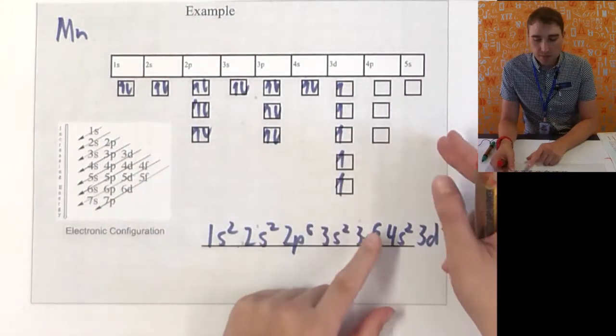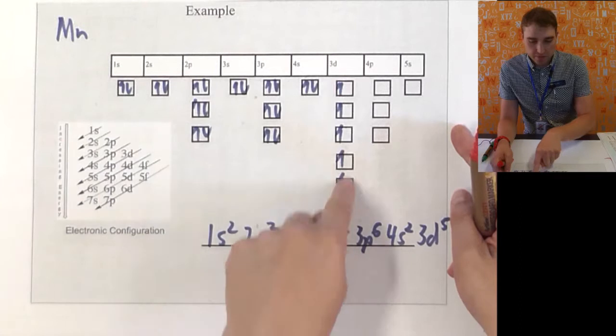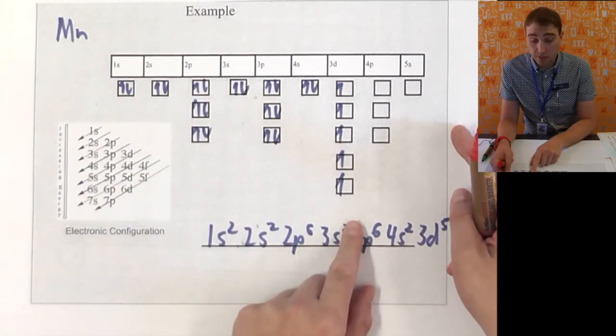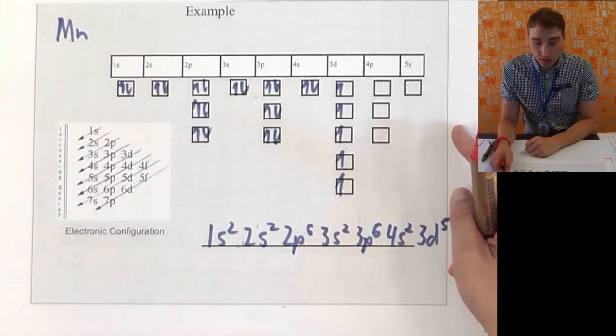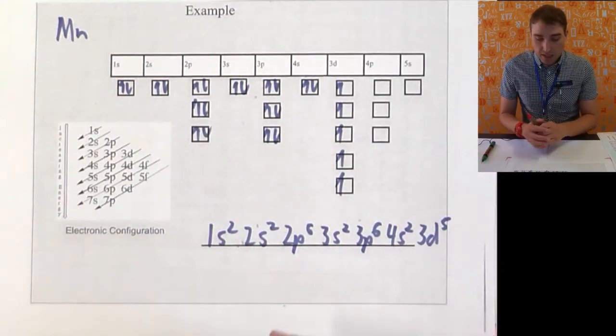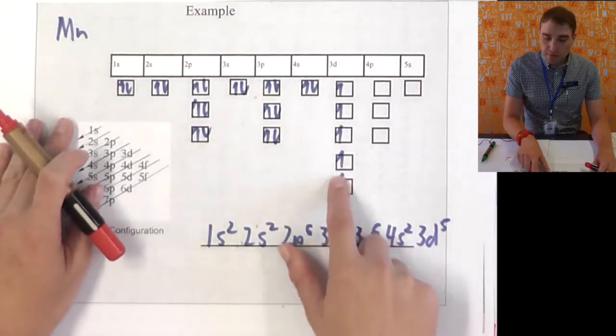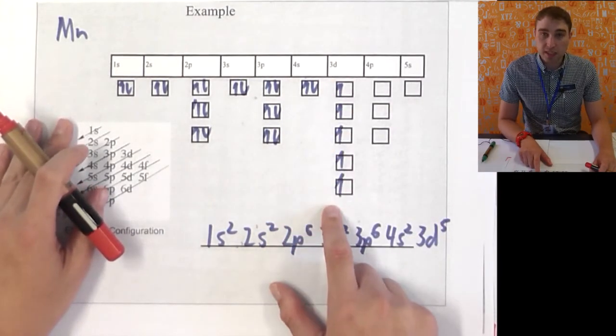Notice how when I'm filling up the shells, I go down first, and then I'll fill up over here. The reason for that is, that tells me where I've got empty electrons in my orbitals. If we're looking at manganese, it has a half full 3d subshell. So, that's really, really stable. That's great.